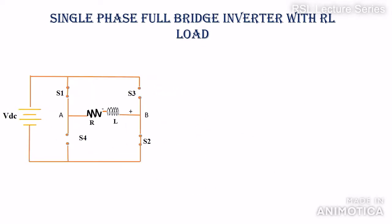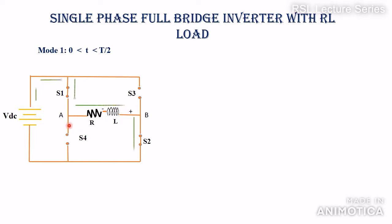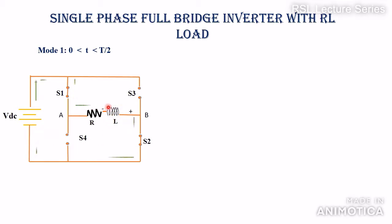Now we will see the modes of operation. Mode 1 is from t = 0 to T/2. During this mode, S1 and S2 will be turned on. Once these switches are turned on, current will start flowing from VDC positive, through S1, through the load from terminal A to B, then through S2, completing the path through VDC negative. Due to the presence of load inductance, current starts flowing and energy is stored in the inductor.